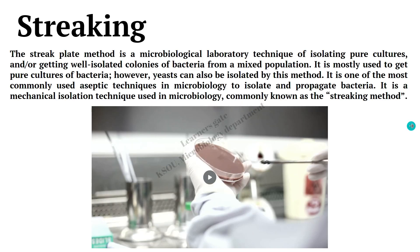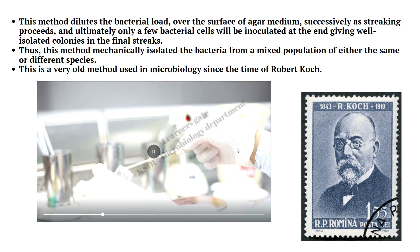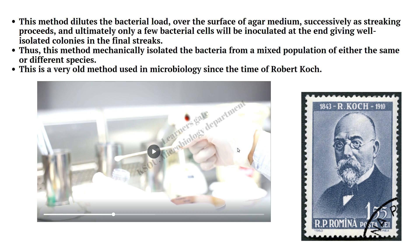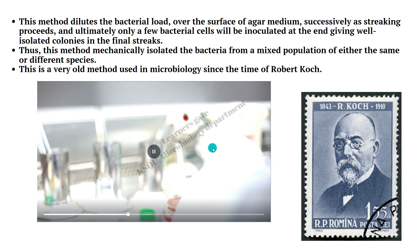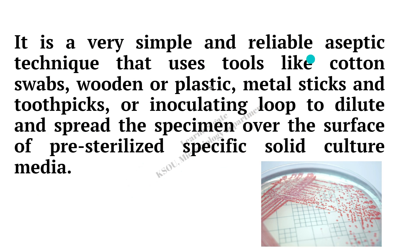The second technique is streaking technique. It is one of the essential and basic techniques used in a microbiological laboratory in order to isolate pure culture from the mixed population. This technique is very popular. It was used since the time of Robert Koch, who was the person who introduced this technique of doing streaking onto the solid media from the suspension. It is a successive streaking procedure where the load of microorganisms drastically reduces from dense to a single colony.